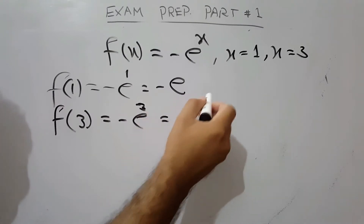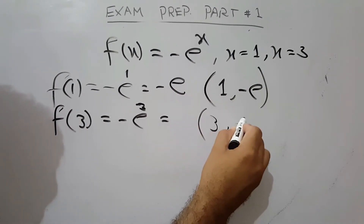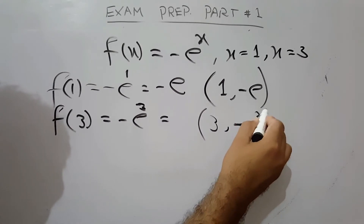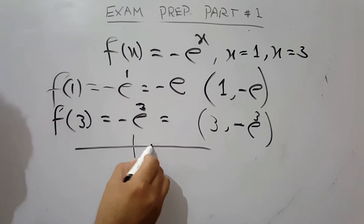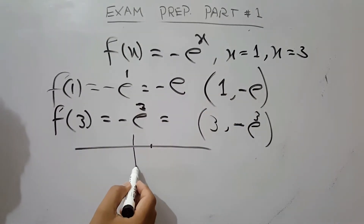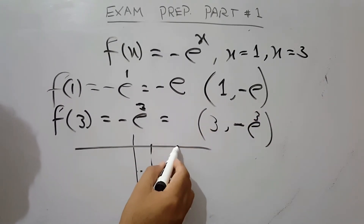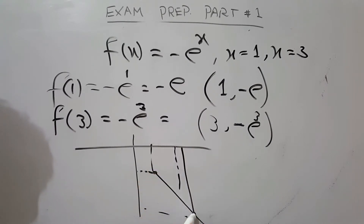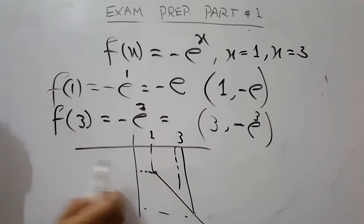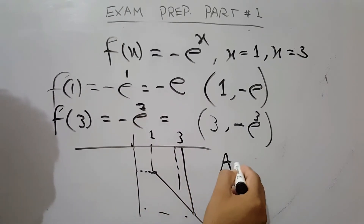With x equal to 3, the curve is minus e. The curve lies in a negative region — approximately y equals negative 2.7. The curve is in the third region. We sketch it. The area under the curve is on the negative axis side. This is a simple area where the region lies below the x-axis.